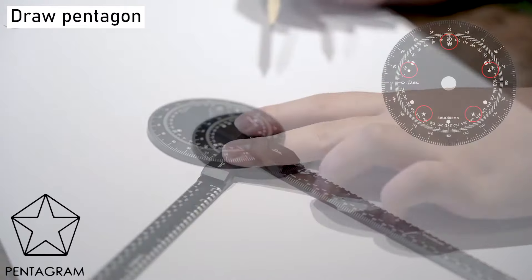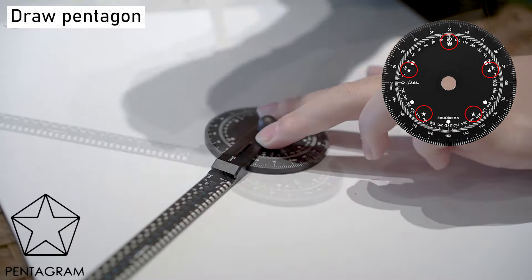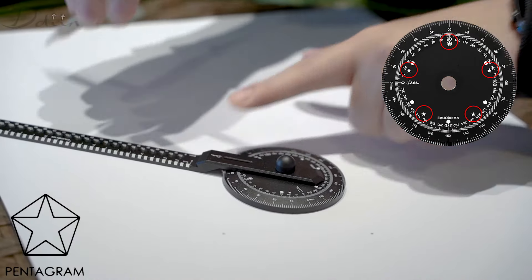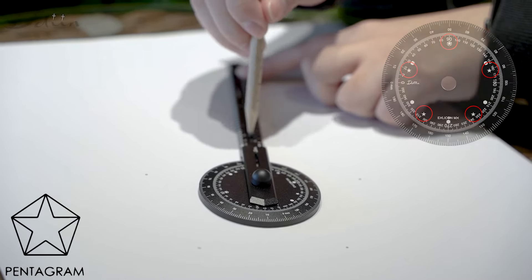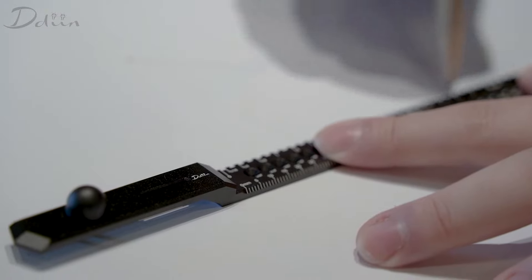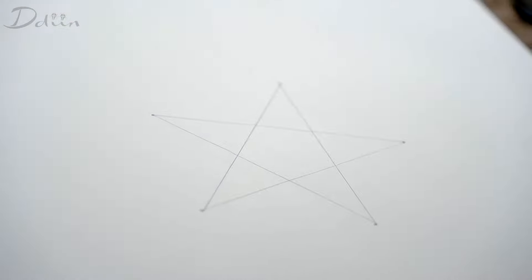To draw a star, locate the star markings on the base and align the pointed tip of the wing to the marking. Mark a point and rotate the wing to the next marking. Repeat until all five points have been marked. Remove the wing and the base from the surface. Grab the long wing and connect the points to form a star.